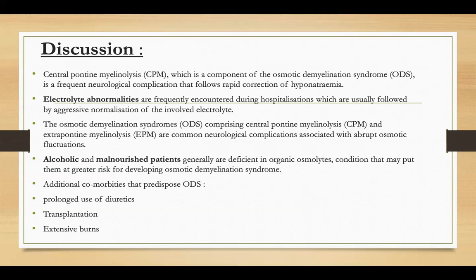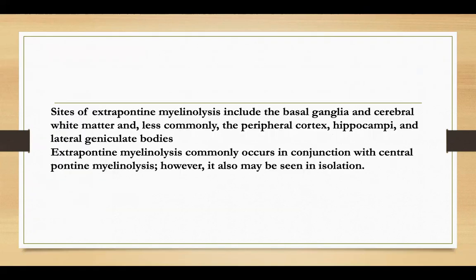Some additional comorbidities that predispose to osmotic demyelination syndrome include prolonged use of diuretics, transplantations, and extensive burns. The sites of extra pontine myelinolysis include basal ganglia and cerebral white matter, and less commonly the peripheral cortex, hippocampus, and lateral geniculate bodies. Extra pontine myelinolysis commonly occurs in conjunction with central pontine myelinolysis; however, it may also occur in isolation.